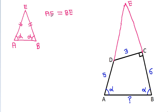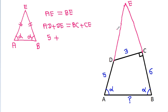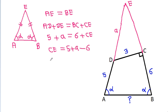AE is AD plus DE, which equals BE is BC plus CE. So AD is 5 plus DE — suppose DE equals A — and that equals BC is 6 plus CE. So CE equals 5 plus A minus 6, which gives CE equals A minus 1.